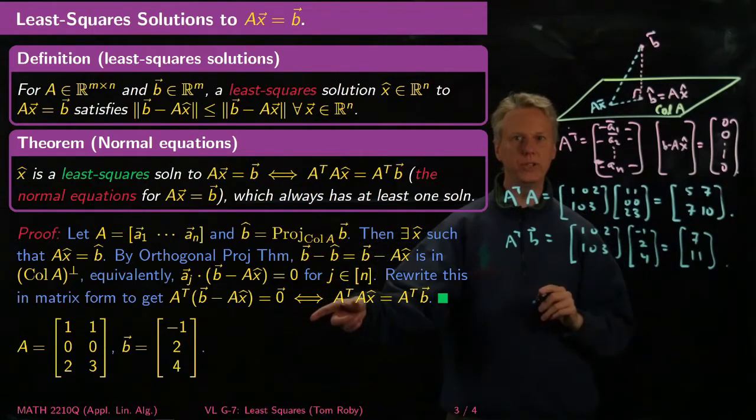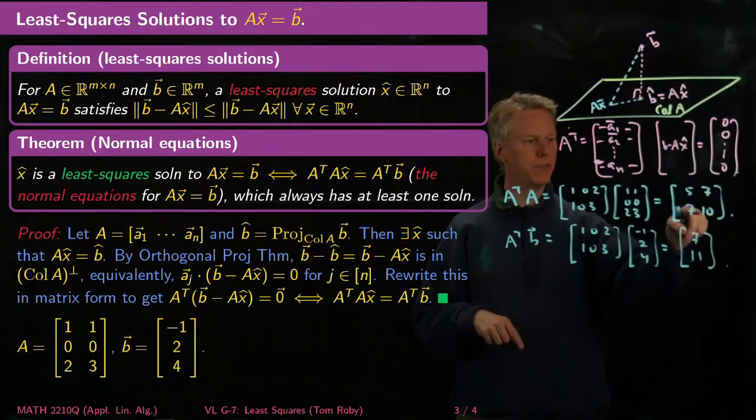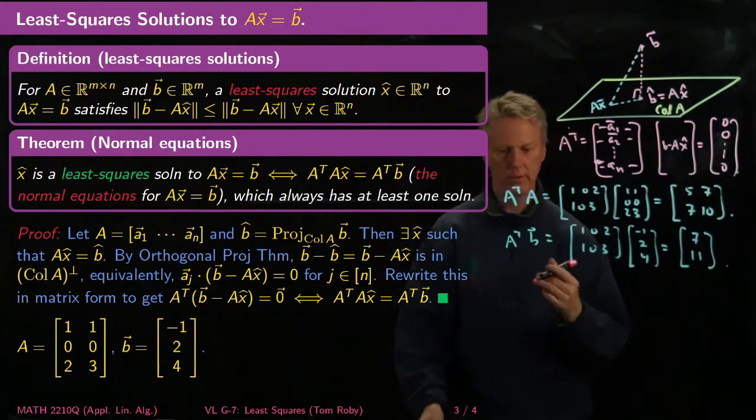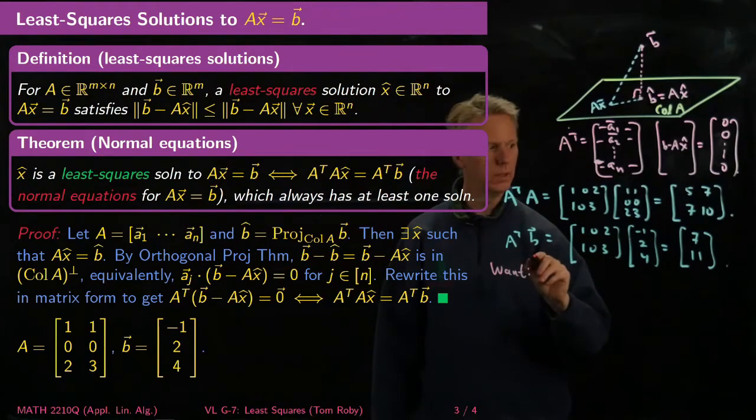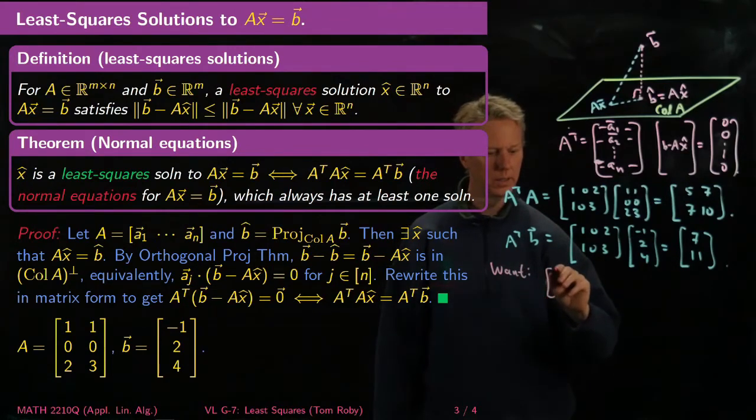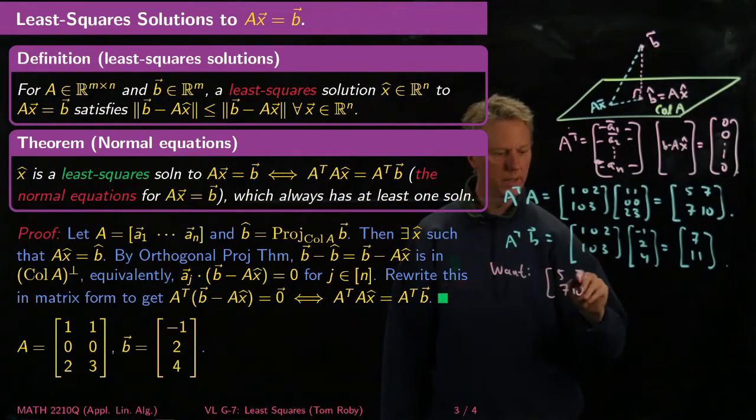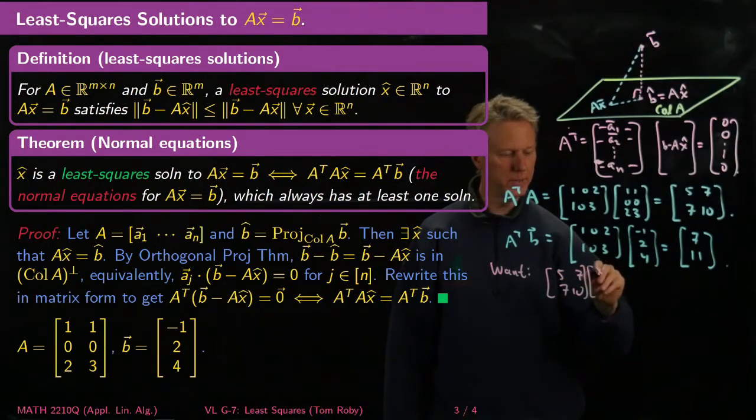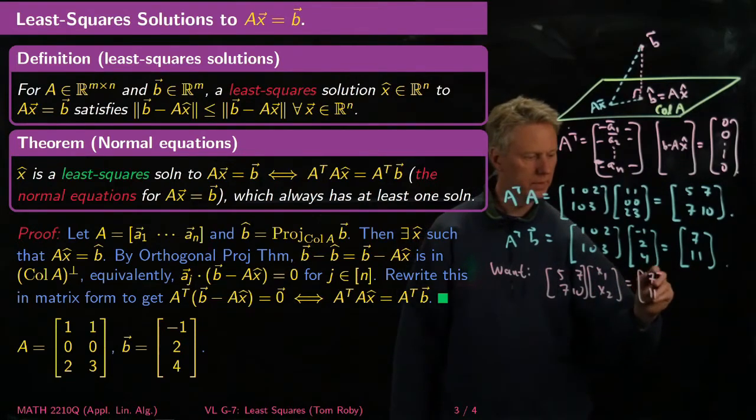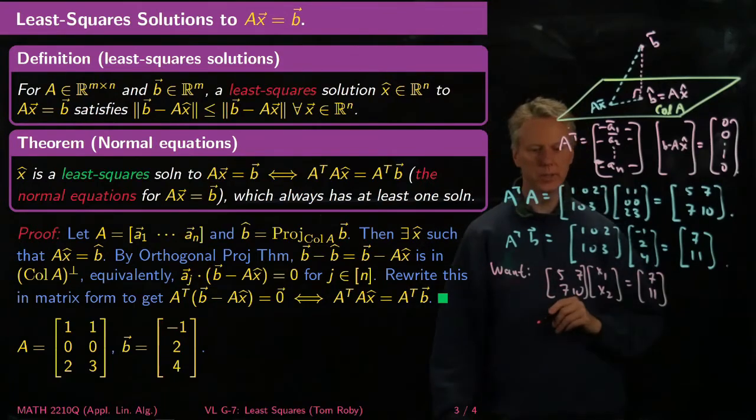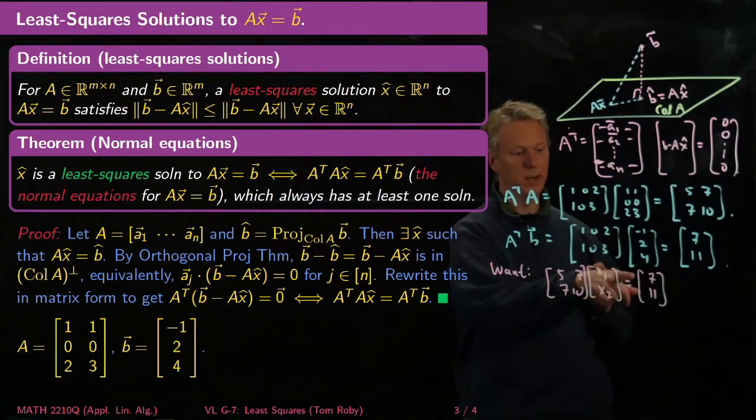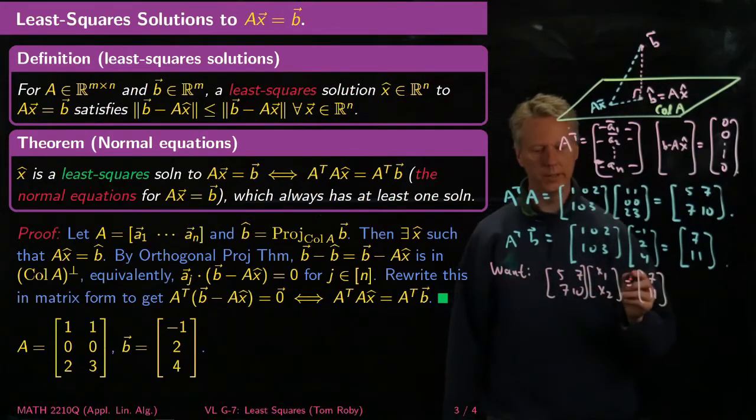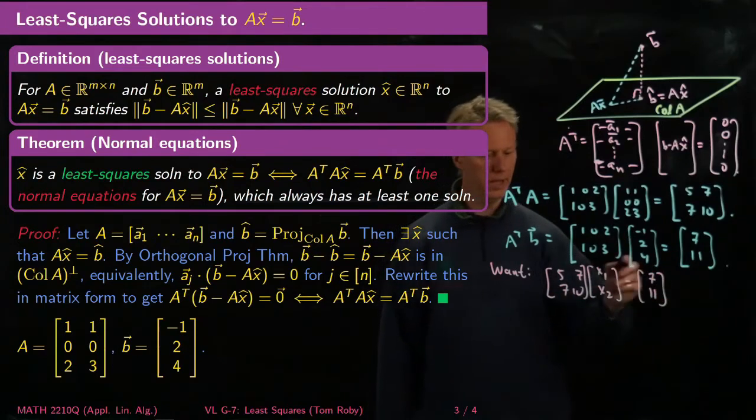Now, A transpose B is equal to [[1,0,2],[1,0,3]] applied to [-1,2,4], and I get [7, 11]. So my new equation, the normal equations, now become this matrix [[5,7],[7,10]] times [x1, x2] equals [7,11]. There are multiple ways you can do this. Since it's a 2 by 2 matrix, maybe the fastest way would be to take the inverse of this matrix and apply it to [7,11].